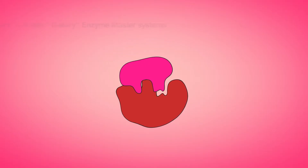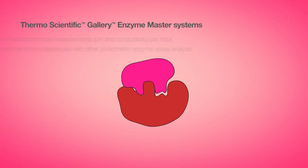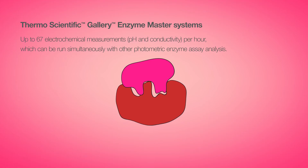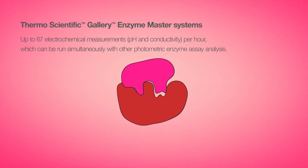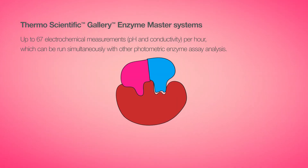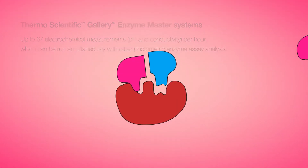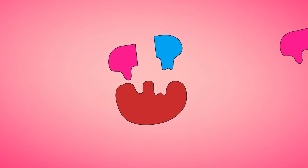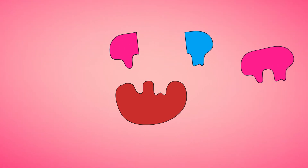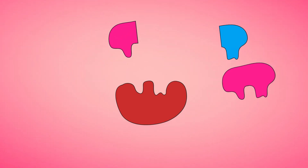pH is a critical parameter in method development and routine enzyme assay measurement. Accurate and reliable determination of the optimal pH is important for successful enzyme assay method development.